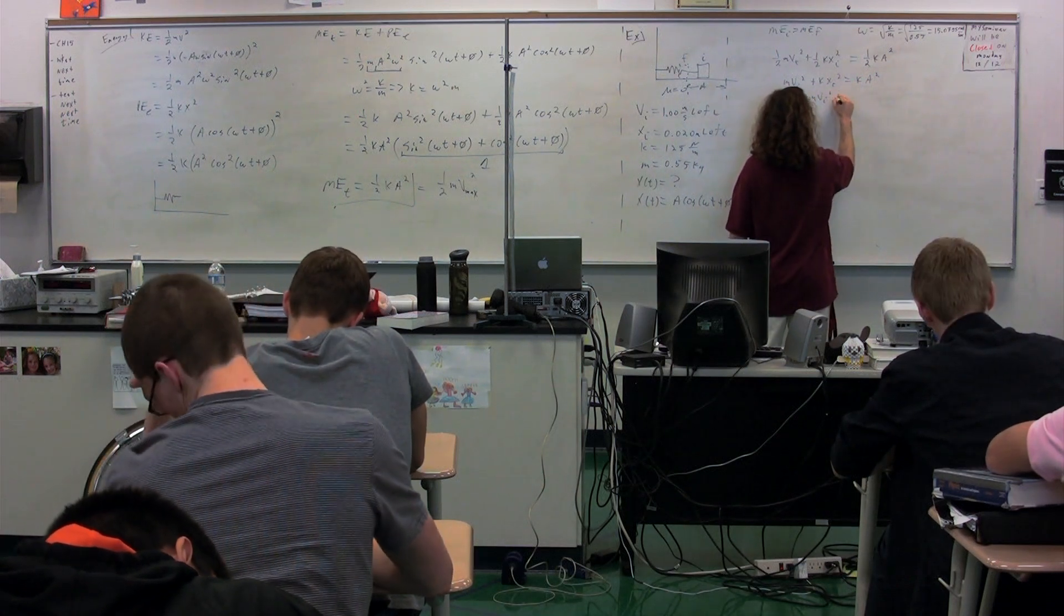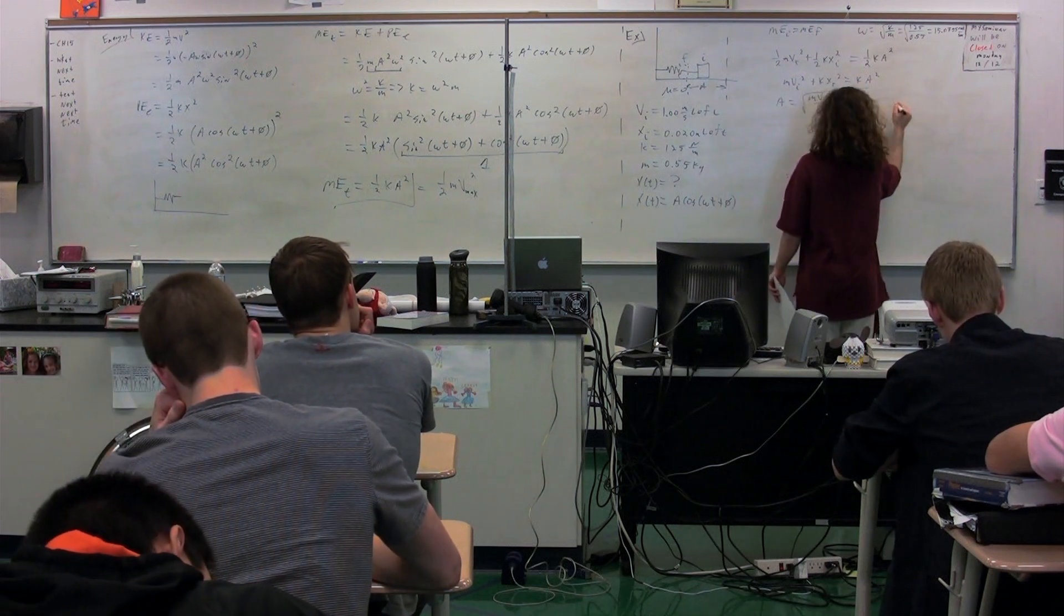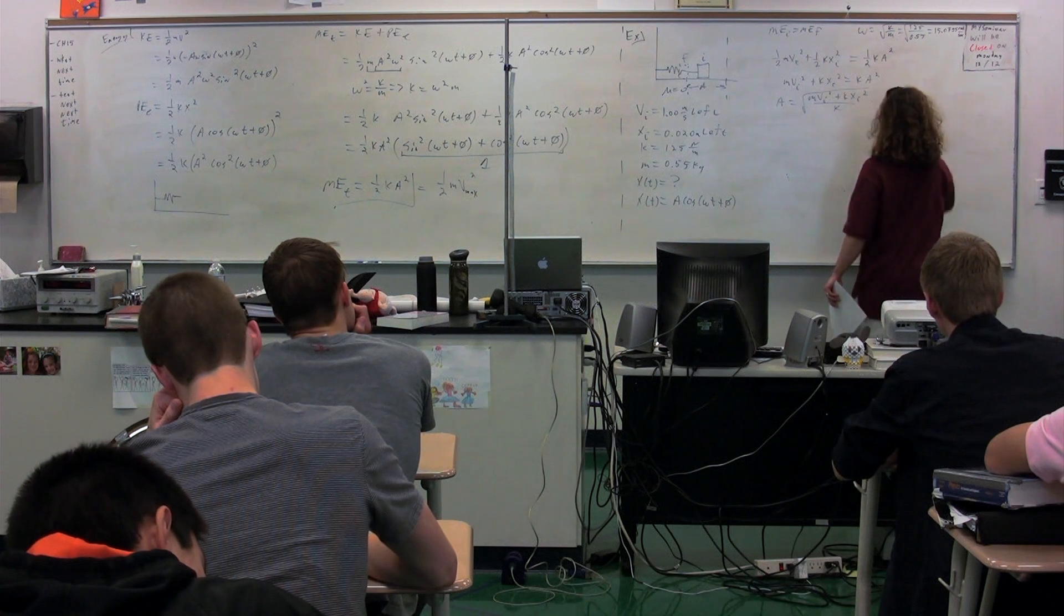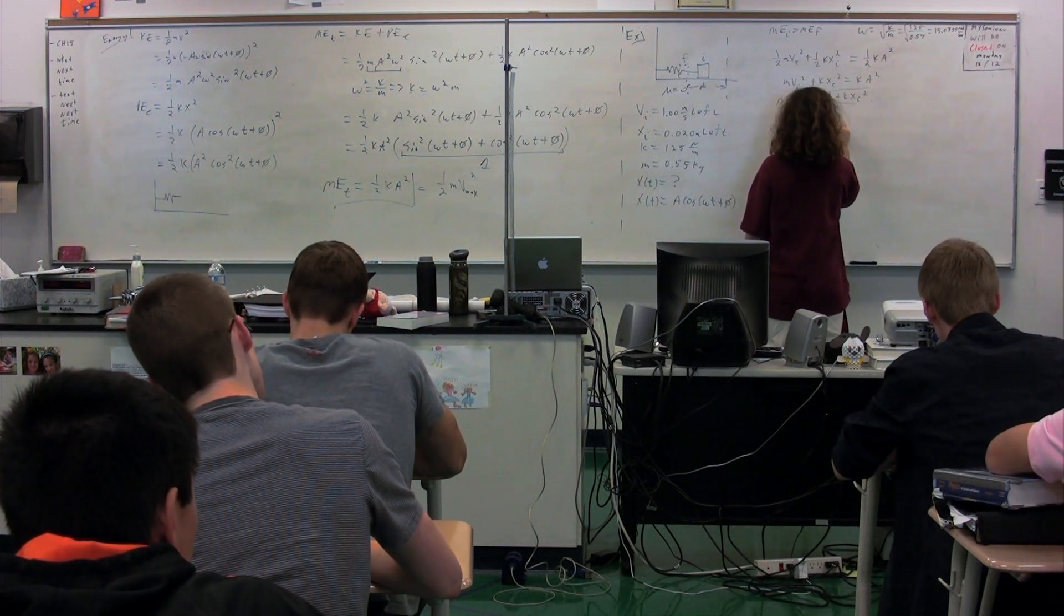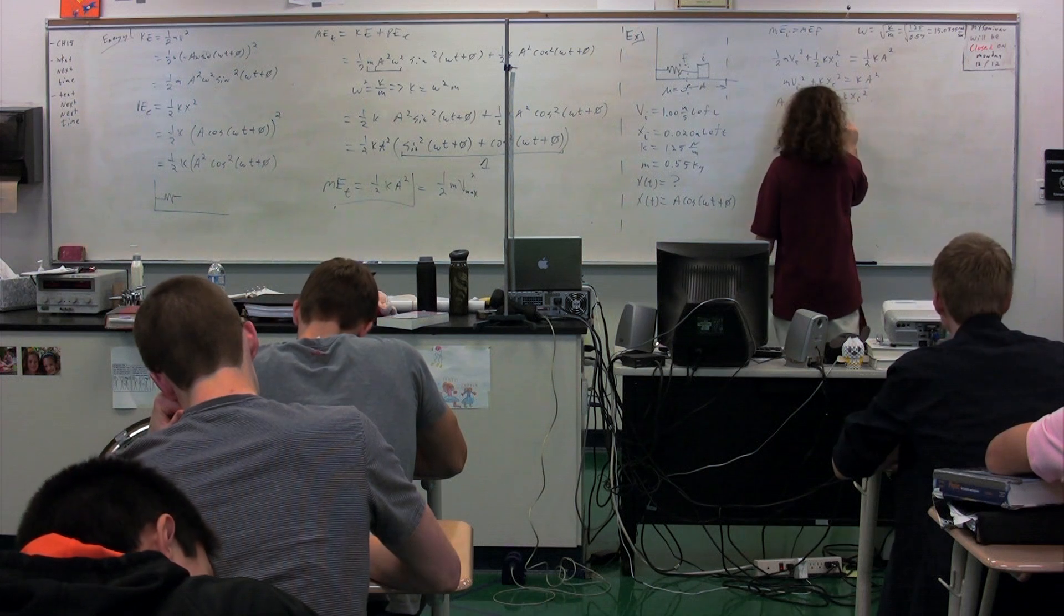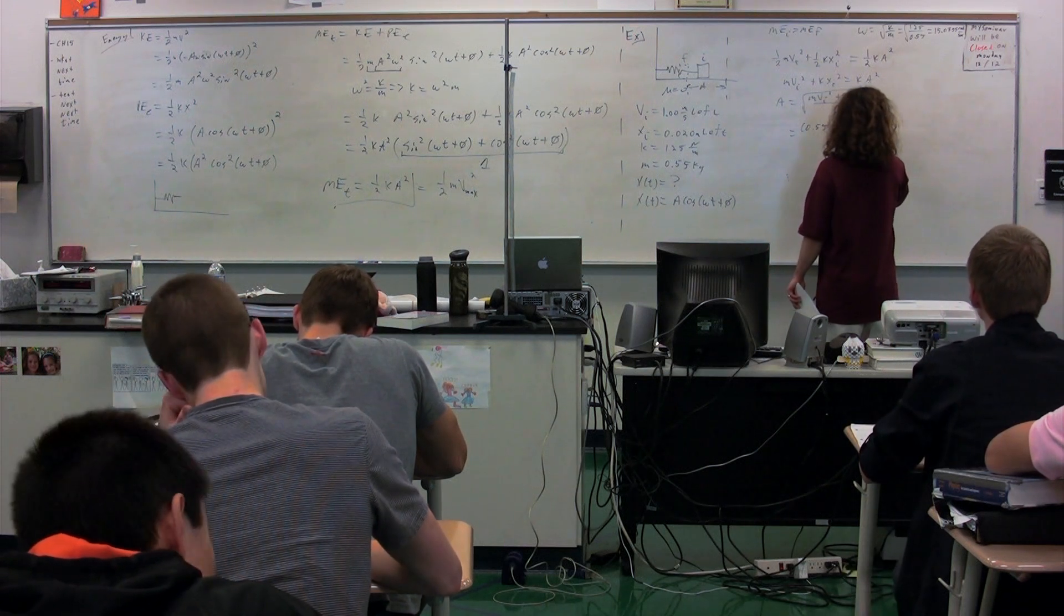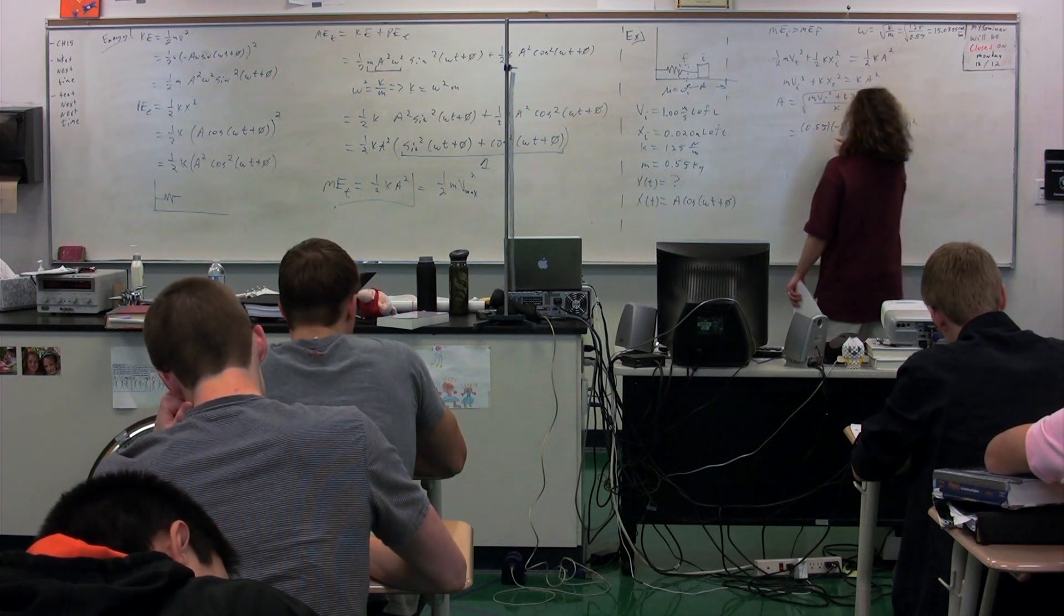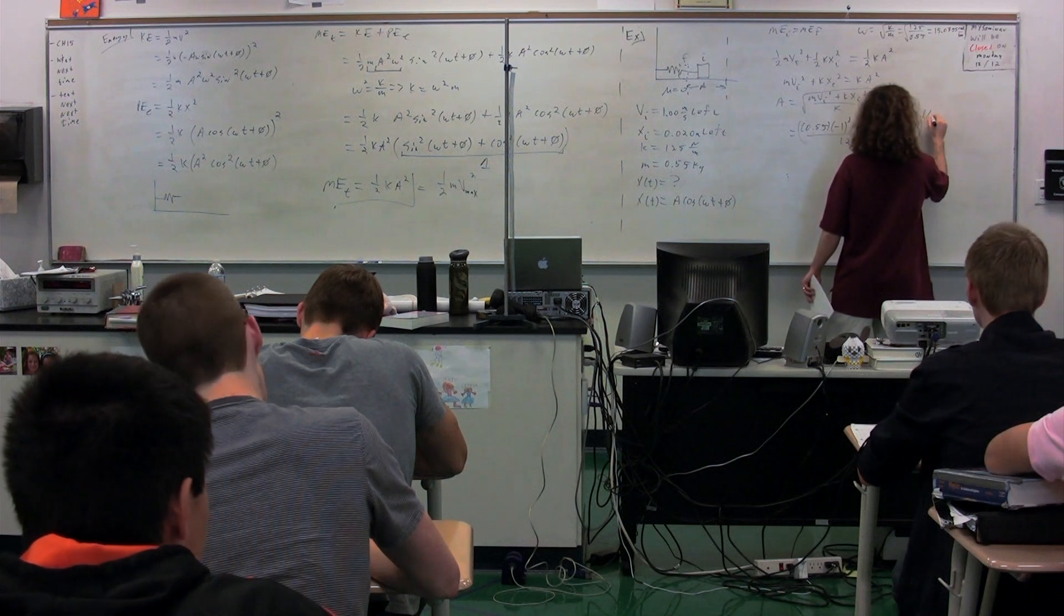So mass times velocity initial squared plus k x initial squared equals k A squared. A, then, is equal to m v initial squared plus k x initial squared divided by k, the square root of. So we have the mass at 0.55 times the velocity initial, which was negative 1, which we're going to square, plus the spring constant, which is 125, multiplied by the initial position, which is negative 0.02 squared, divided by the spring constant, 125, the square root of that whole thing.